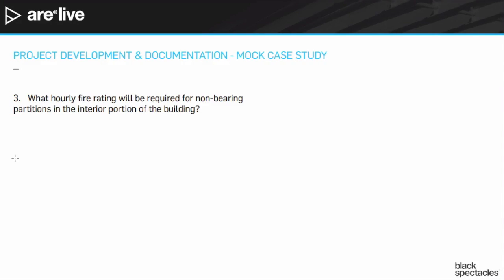So this question: what hourly fire rating will be required for non-bearing partitions in the interior portion of the building? There's going to be somewhere in our building code some information about exterior bearing walls — say three hours, or maybe two hours if it's far enough away from the property line. And interior columns might be one hour or two hours, depending on which construction type it is.